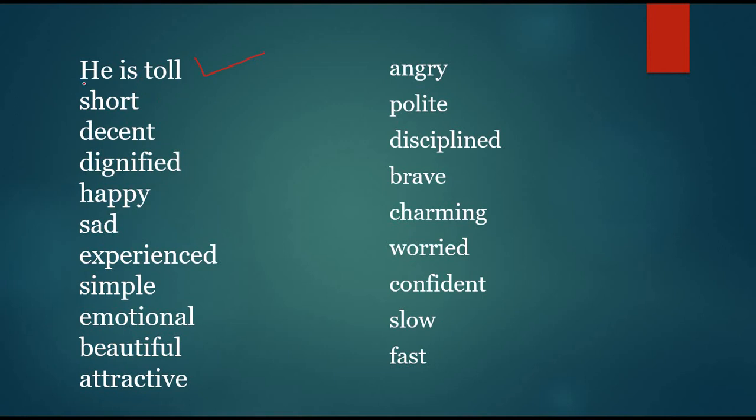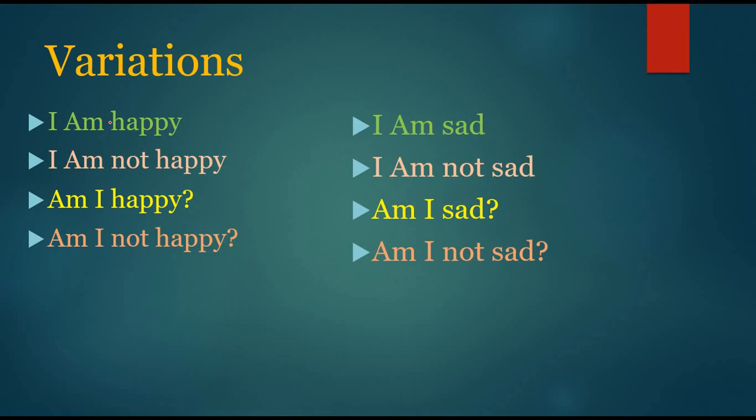Same way, she is a teacher, she is not a teacher, is she a teacher, isn't she a teacher. So same way, try to make variation for each and every sentence that you do. So in the same way, collect many adjective-type words and make sentences: he is tall, she is tall, it is tall, Surya is tall, she is short, she is decent, he is decent, he is dignified, he is happy, she is sad, he is experienced, she is simple, he is simple, it is simple. He is emotional, she is emotional, Latha is emotional. She is beautiful, she is attractive, he is angry, she is angry, she is polite, she is disciplined, she is brave, she is charming, he is worried, he is confident, he is slow, he is fast. Like this, you can make any number of sentences if you can collect maximum words.